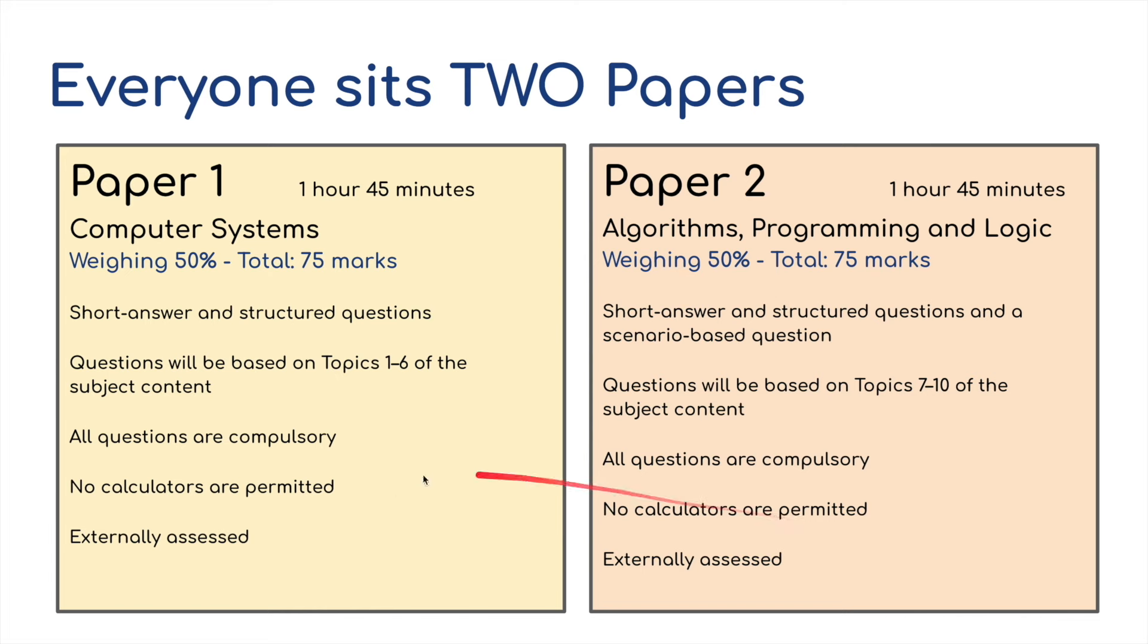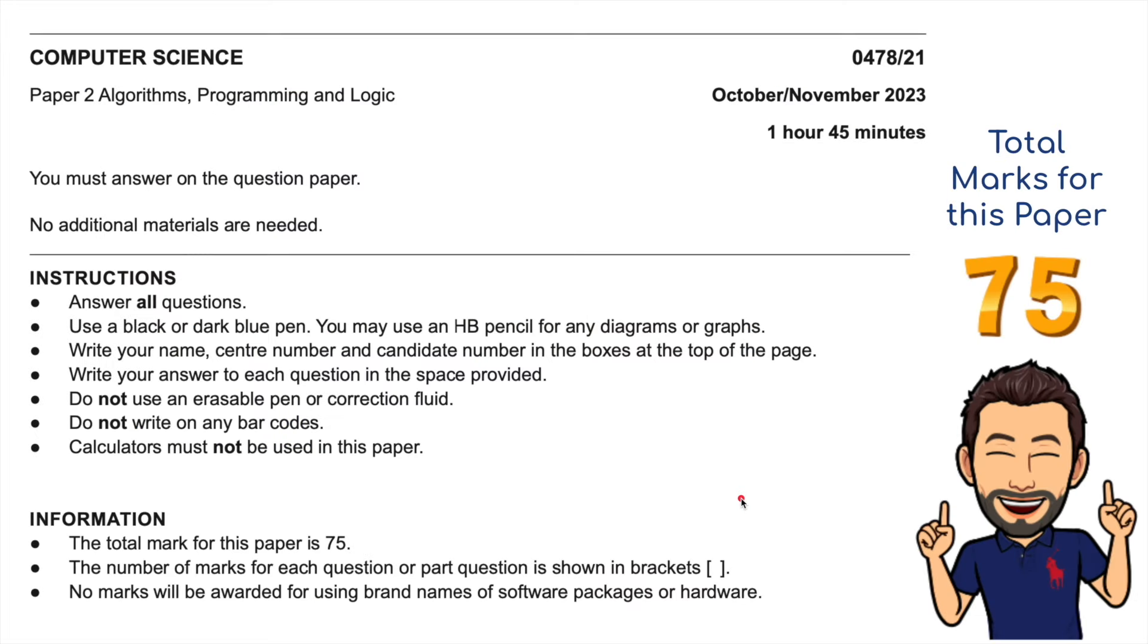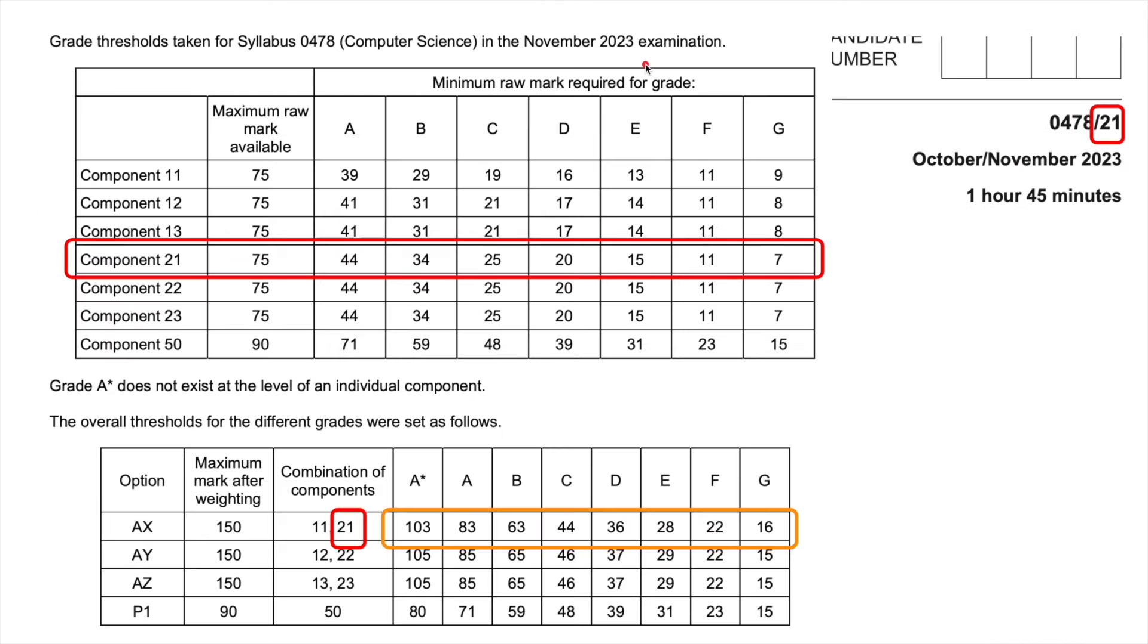Both papers take an hour and 45 minutes. Both papers have a 50% weighting and both papers are worth 75 marks. Remember, Paper 2 is generally the algorithms, programming, and logic, Topics 7 to 10, whereas Paper 1 was for Topics 1 to 6. Just a reminder that calculators will not be allowed for either of these papers.